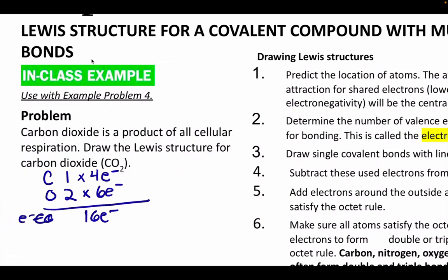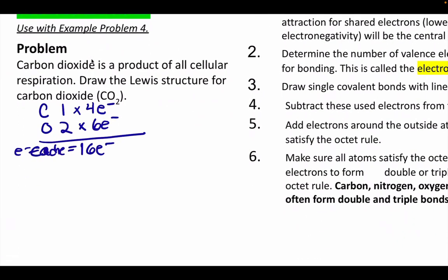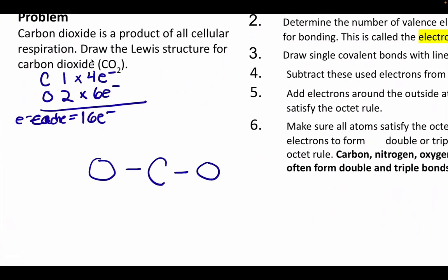I'm going to put the carbon in the middle. Always put carbon in the middle if you have to pick. I'm drawing single covalent bonds. Each one is two electrons, so I've used four. So I have 12 electrons left. Now here's where it's really important that you follow the rules.